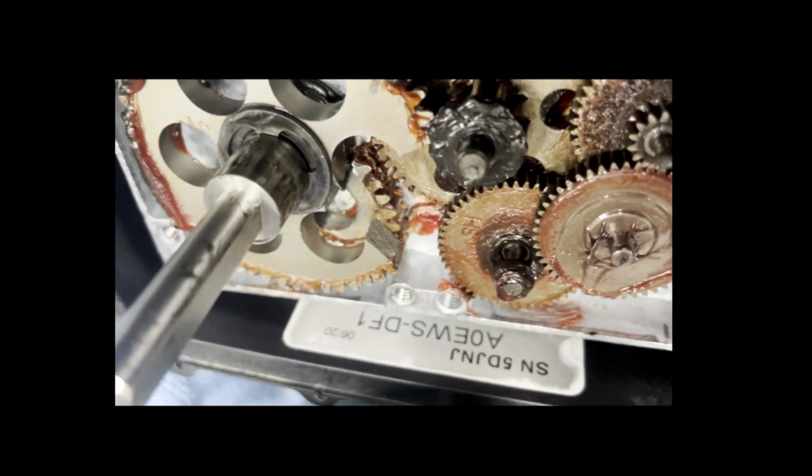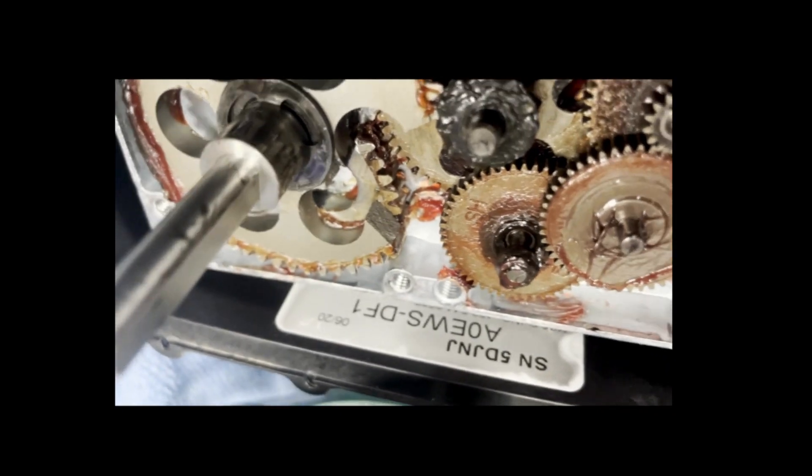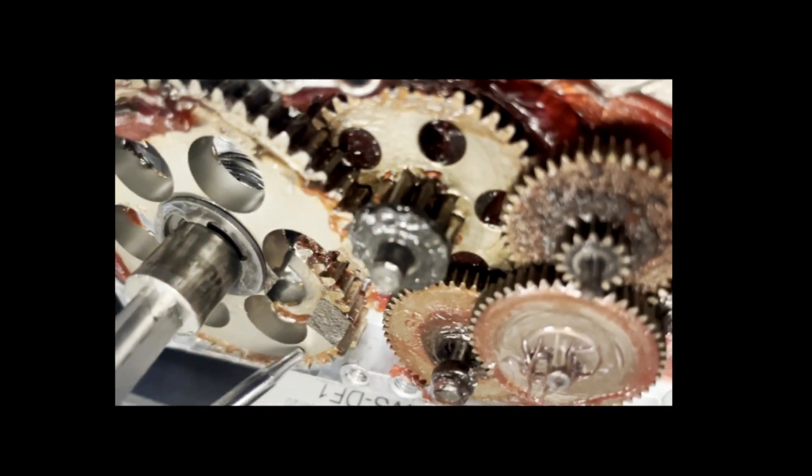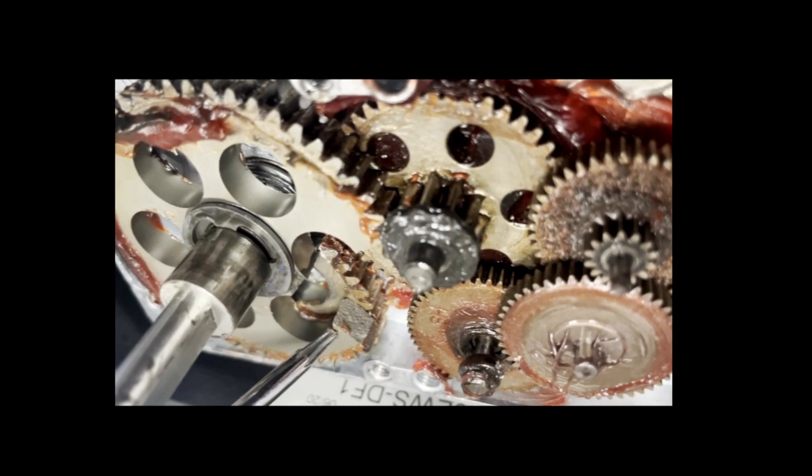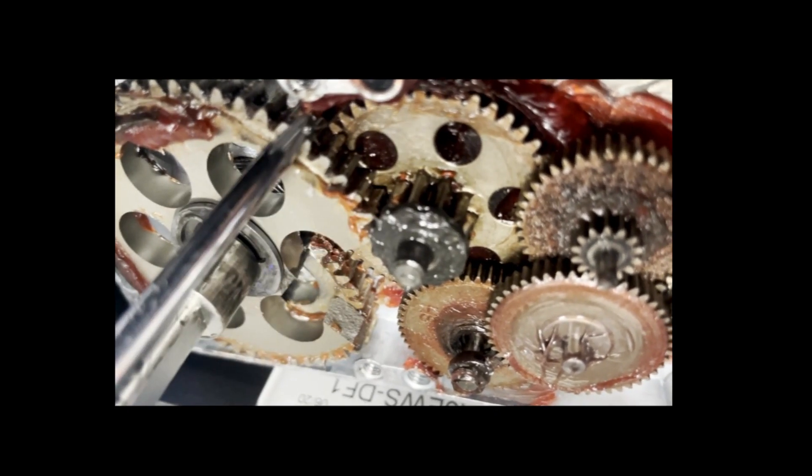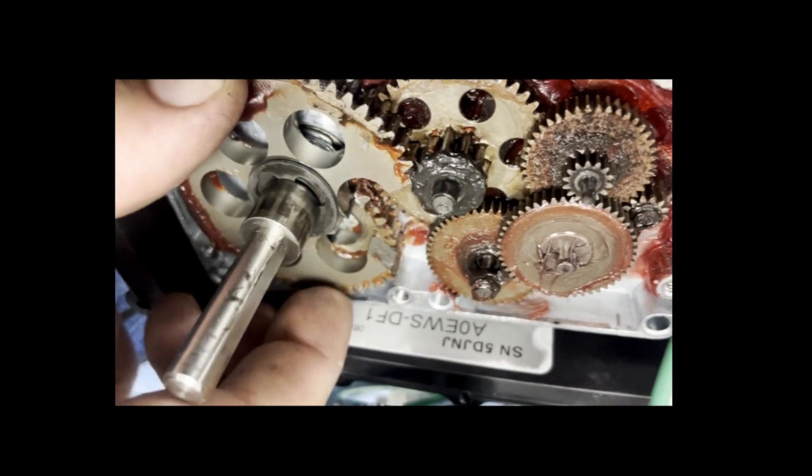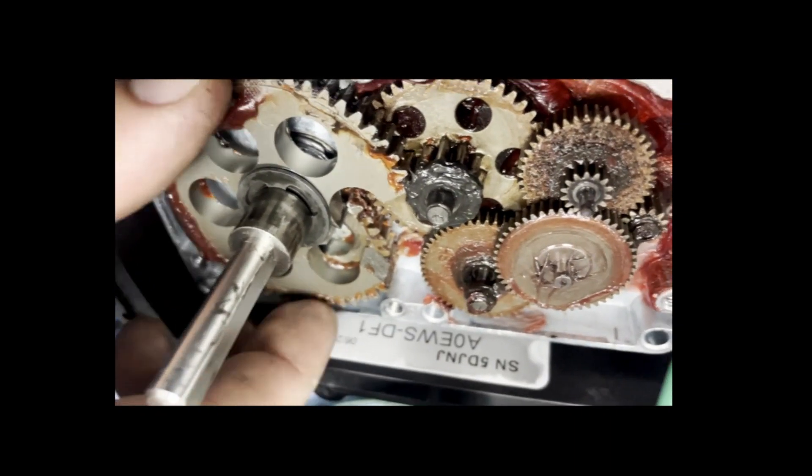Now we can see inside and immediately we know what the problem is. You can see this gear here. The main gear has shattered and definitely would not be able to spin. It's completely locked down.